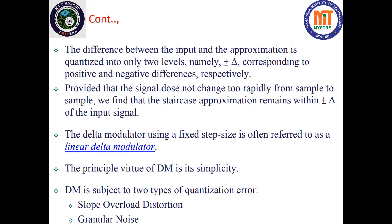So there are only two voltage levels used in delta modulation, whereas in pulse code modulation you can have multiple voltage levels such as 1 volt, 2 volt, 3 volt, 5 volt, and so on. In delta modulation, the voltage is either increasing by one step or decreasing by one step — only two levels of quantization. The signal is also assumed to not change rapidly from one sample to another.